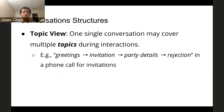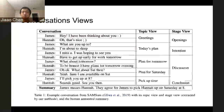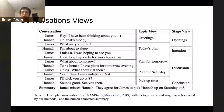However, there are still certain patterns we could follow in conversations. Here we highlight two conversation structures. The first one is topic view: one single conversation may cover multiple topics during interactions. The second one is stage view: conversations develop following certain patterns. Here we show an example with two different views. From the topic view, James and Hannah first talk about greetings, then today's plan, plan for tomorrow, plan for Saturday, and last the pick-up time. From the stage view, they start with openings and intentions, then discuss the details, and then come to a conclusion.